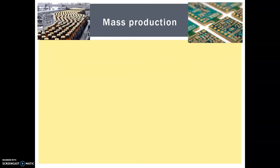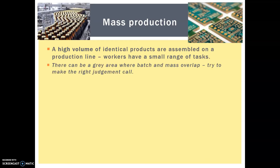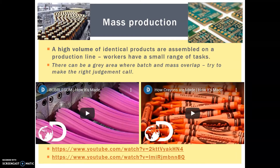Mass production by comparison is a high volume of identical products, assembled on a production line. Workers usually have a very small range of tasks. The grey area arises between batch and mass, but hopefully as you become more familiar — I have a couple more videos here, one about bubblegum and one about crayons — that'll start to cue you in to which it might be.